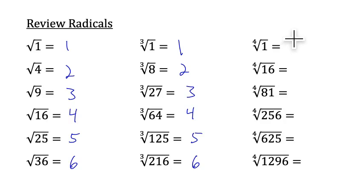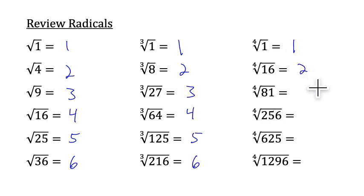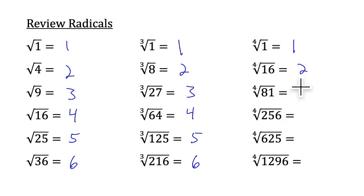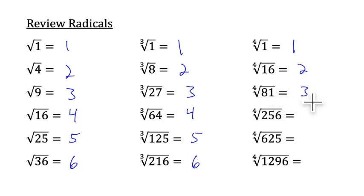Similarly, the fourth root is asking us what number multiplied by itself four times equals the number inside the radical. 3 times 3 times 3 times 3 equals 81, so the fourth root of 81 equals 3.